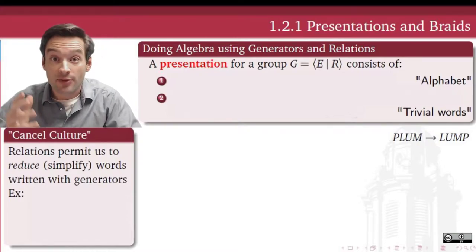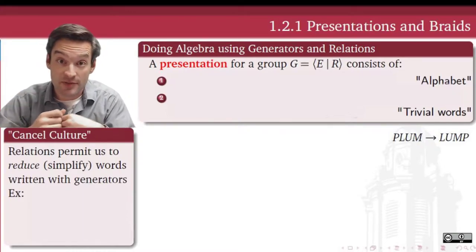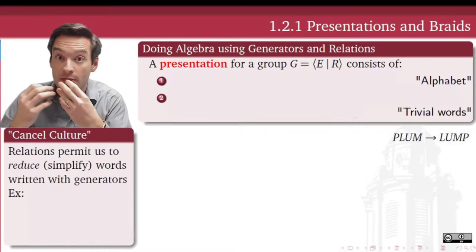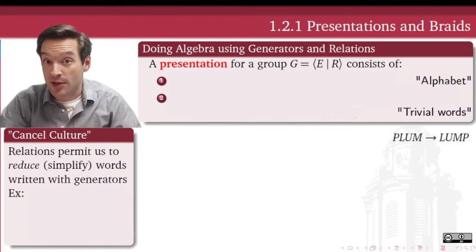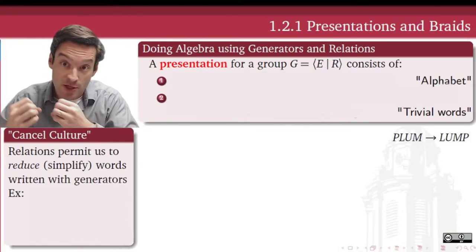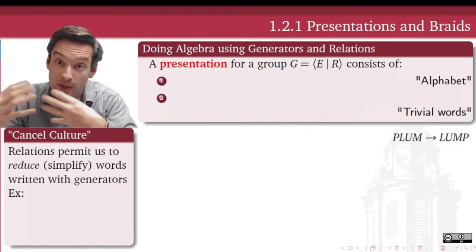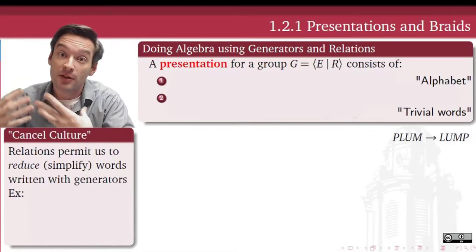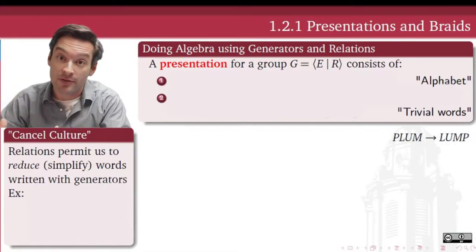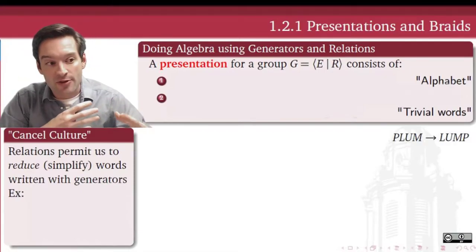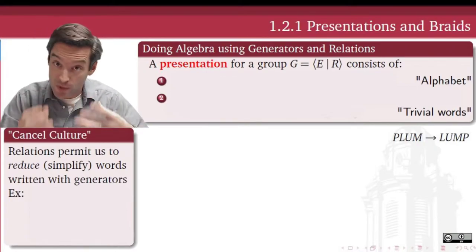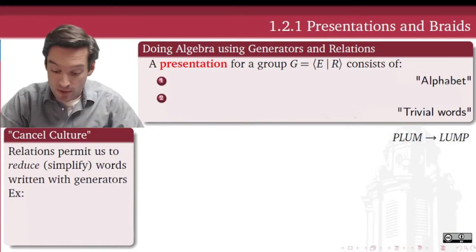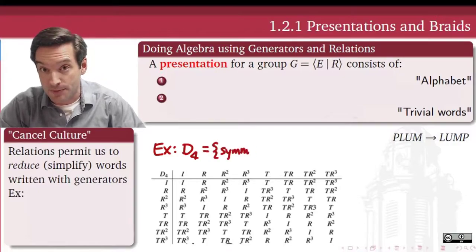I like to think of generators and relations as giving us the nouns and the verbs needed to make an algebraic structure. The generators serve as the nouns — the building blocks we use to construct our elements — and the relations give us a set of verbs, a set of relationships between those generators that we can use to flesh out our algebraic structure.